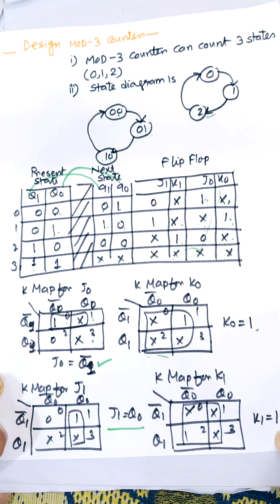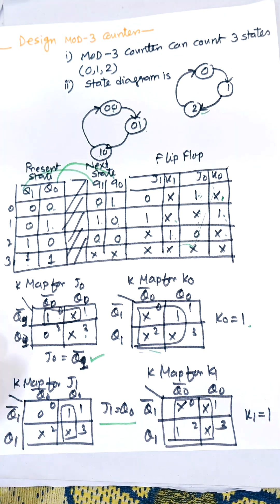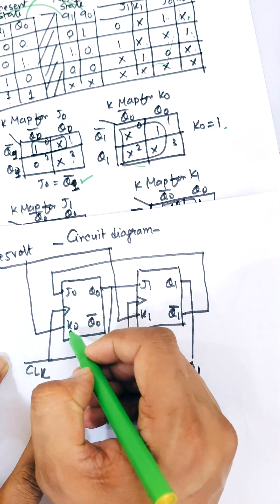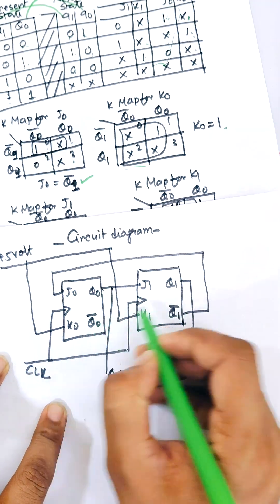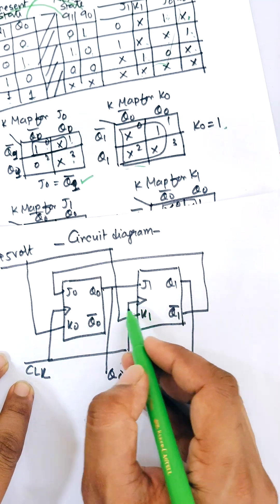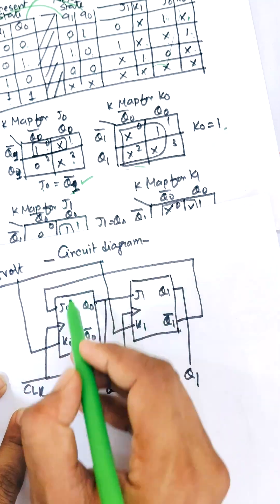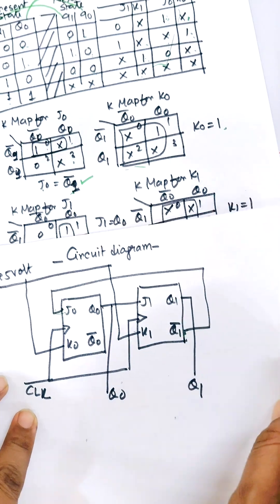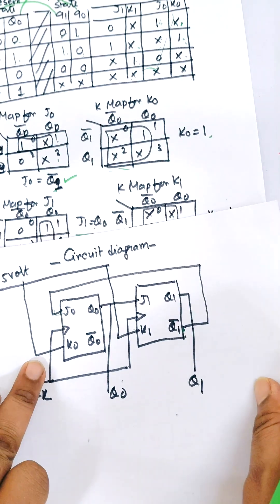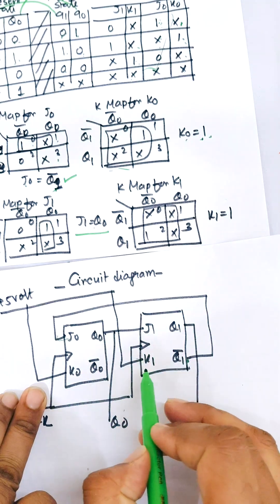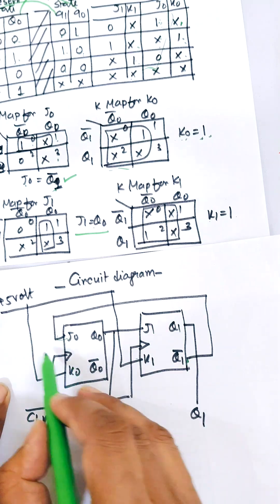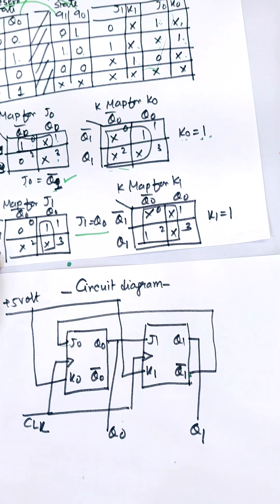Now we need to draw the circuit for the mod 3 counter. The main concept is to use two JK flip-flops with inputs J0, K0, J1, K1, and outputs Q0, Q0-bar, Q1, Q1-bar. A positive clock (CLK) is applied to both JK flip-flops. J0 is connected to Q1-bar, and J1 is connected to Q0. K0 equals 1 and K1 equals 1, so both K inputs are connected to logic high (1 voltage). This is the complete circuit diagram for the mod 3 counter.